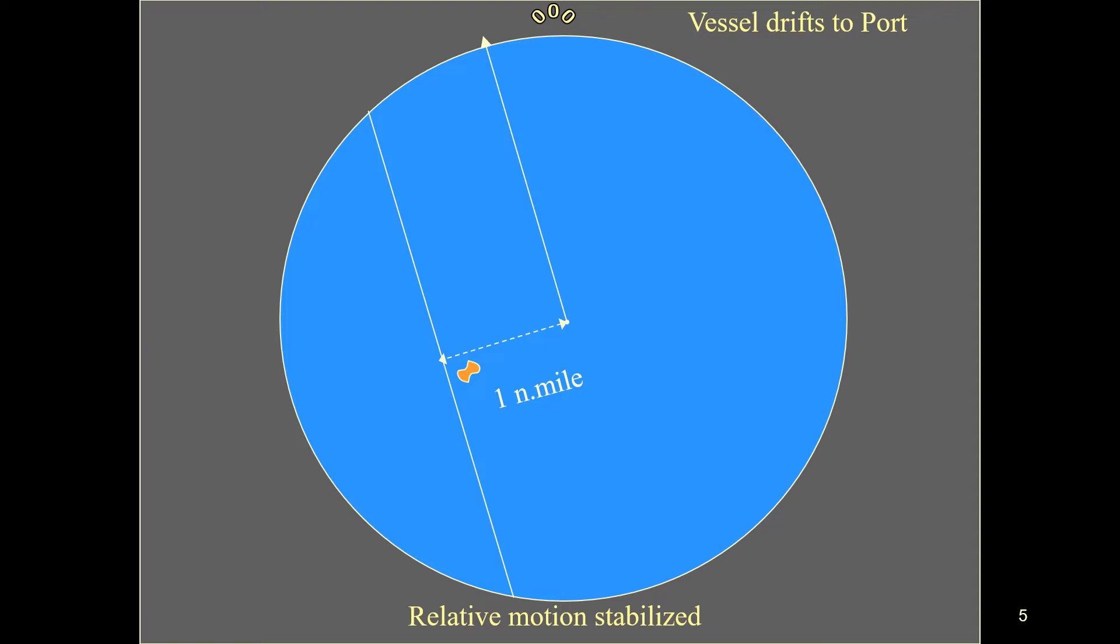As you will see now on your screens, I'll show you examples of what happens when the vessel drifts to port and then when vessel drifts to starboard of the desired track. You'll see how the parallel index marker moves with respect to the ship's movement.